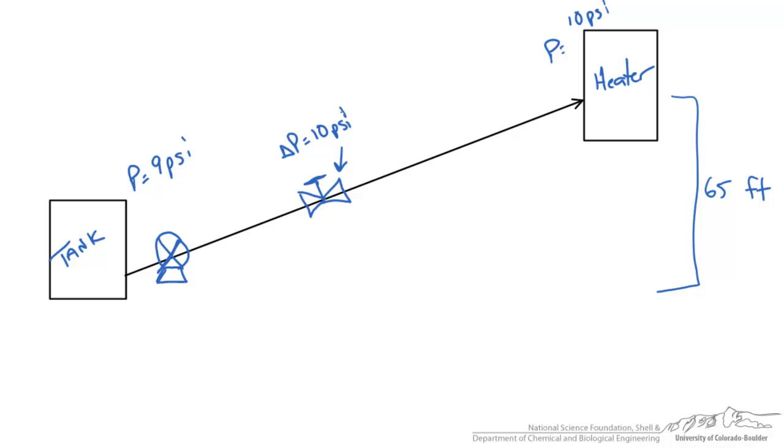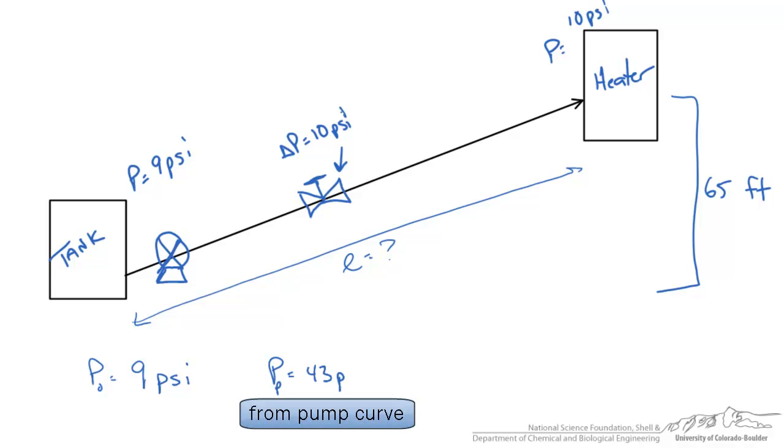At this point, we're going to do a pressure balance to determine the maximum length this pipe can be. We know our initial pressure is 9 psi, and to that we're going to add a pump pressure of 43 psi. That's our maximum head we can produce from the pump given the flow rate. Both of these pressures are positive because they're what we're starting with and what we're adding to the system.